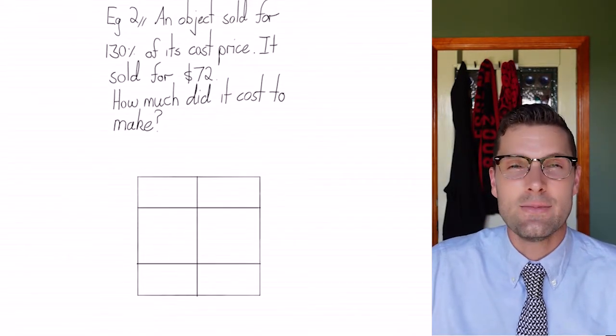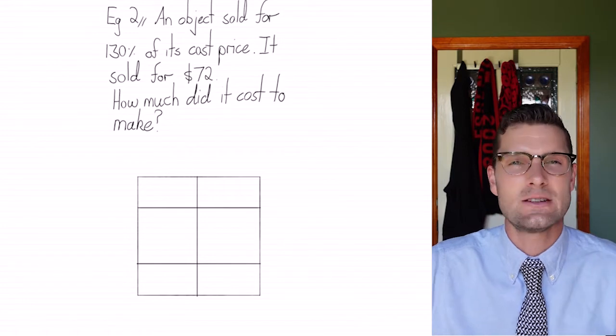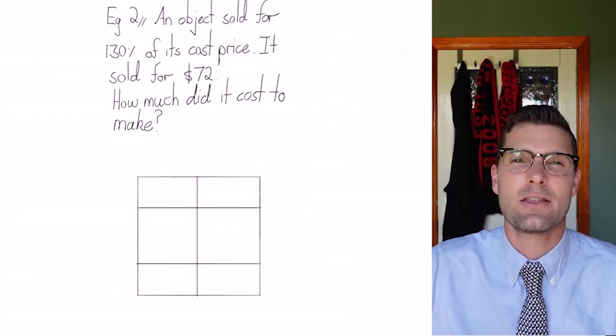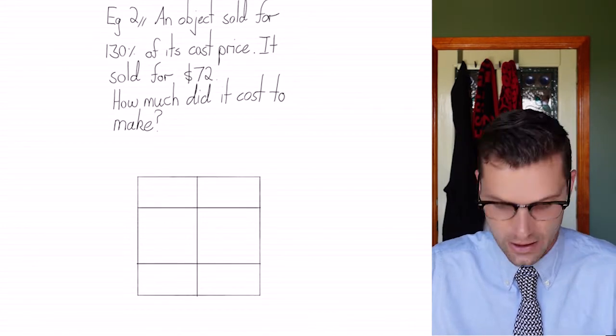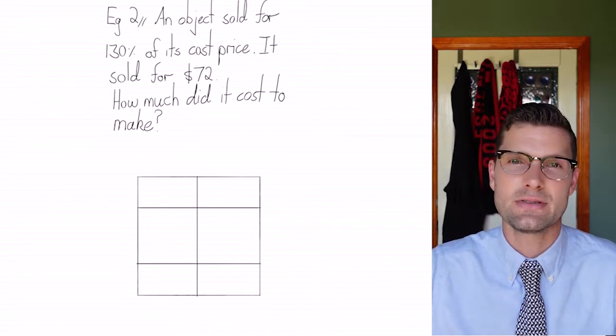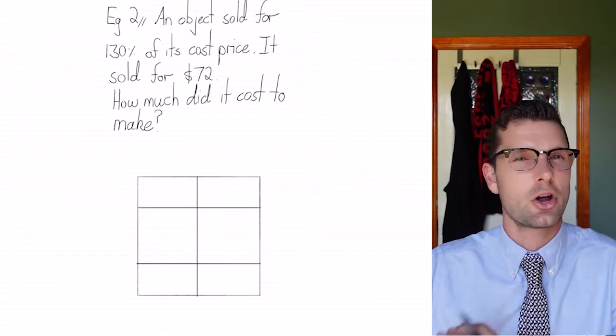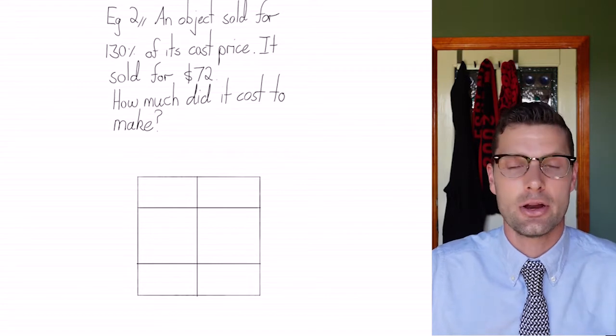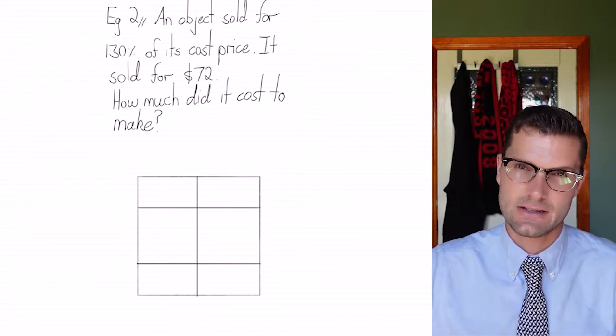So we're gonna do this in one table this time. So we don't wanna waste space. We'll see if we can just get it into three lines of working that are nice and quick. So an object sold for 130% of its cost price. So it cost something to make, we wanted to make a 30% profit. It sold for 72 bucks.